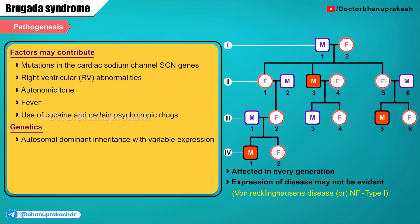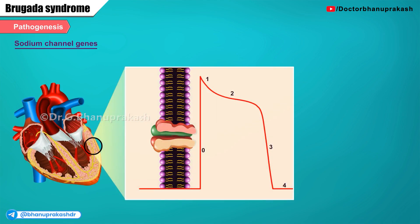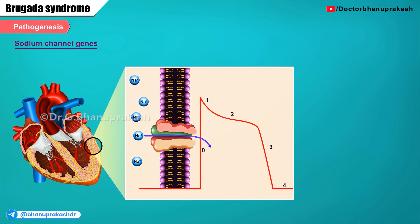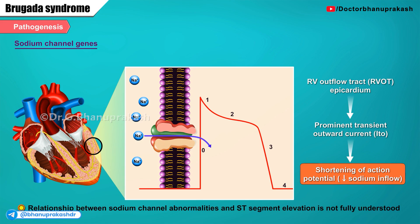Genetic analysis has led to the identification of causative mutations in the sodium channel genes SCN5A and SCN10A, encoding the subunits of a cardiac sodium channel. The defective myocardial sodium channels reduce sodium inflow currents, thereby reducing the duration of normal action potentials. In the right ventricular outflow tract epicardium, there is a prominent transient outward current called the ito current, which causes marked shortening of the action potential in the setting of reduced sodium inflow. The relationship between sodium channel abnormalities and ST segment elevation is not fully understood.